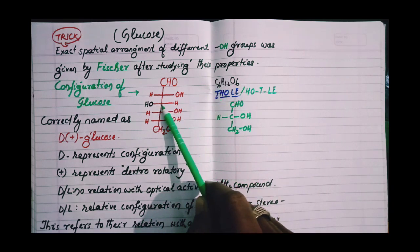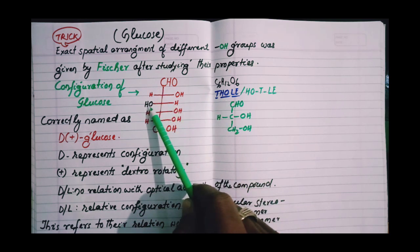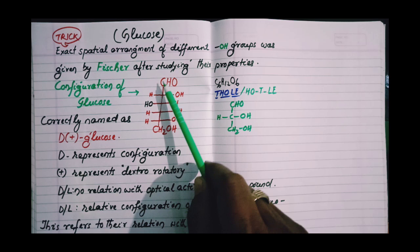In 3rd position, the HO group is present to the left of the carbon chain, HO towards the left of the carbon chain.